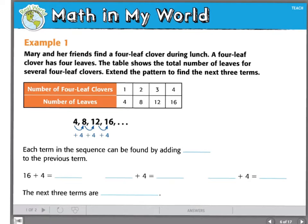Here in our table we can see that one four-leaf clover would have four leaves. Two four-leaf clovers would have eight leaves. Three would have twelve, four, sixteen.